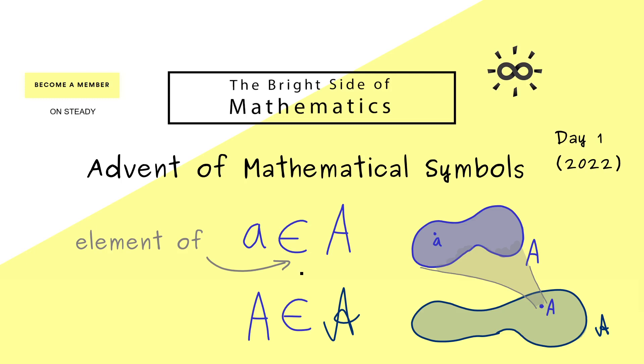So there we have it. This is the element symbol we use throughout mathematics to describe the element-set relation. If you want to learn more about this, I have a whole video course called Start Learning Sets. Let's meet there or on the next day for the next mathematical symbol.